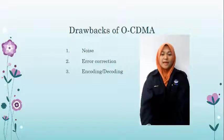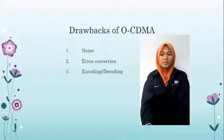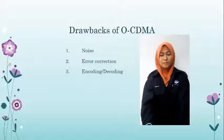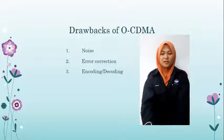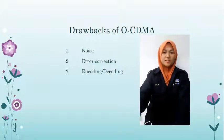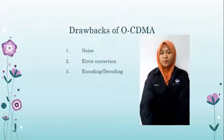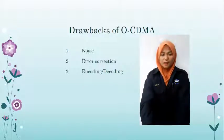Second: error correction. Forward error correction is costly and impractical in OCDMA because the speed for carrying information in electrical cables and optical fiber is not the same. For this reason, we have to design specialized encoding and/or decoding devices in order to correct errors in the case of optical signal transmission.